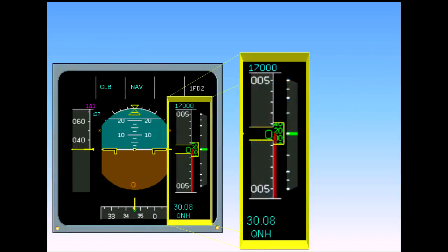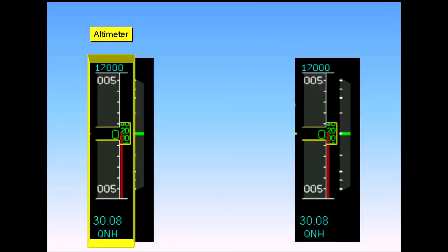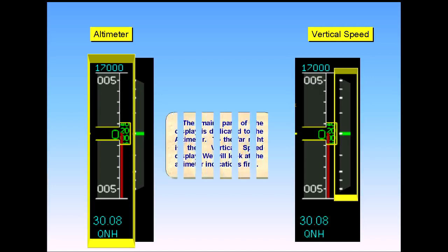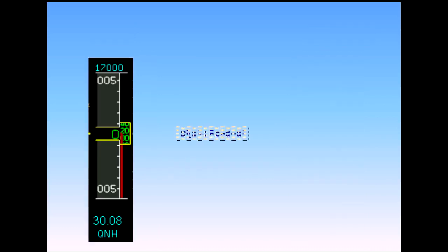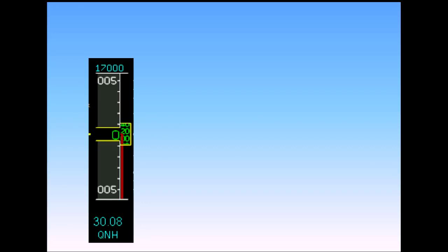All the indications associated with altitude are located on the right-hand side of the PFD. The main part of the display is dedicated to the altimeter. To the far right is the vertical speed display. The middle part of the altimeter contains a green digital readout of altitude. The red ribbon to the right of the altitude scale represents the field elevation, and is currently level with the center of the scale.